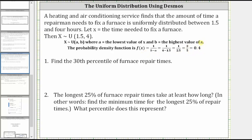For number one, we're asked to find the 30th percentile of furnace repair times. This is the repair time that is greater than or equal to 30% of all of the repair times. If we let k equal the 30th percentile, we can express this as the probability that x is less than k is equal to 30%, or 0.3.